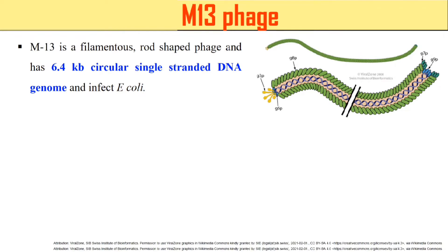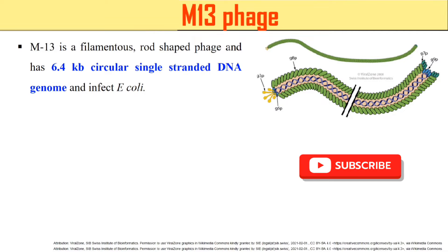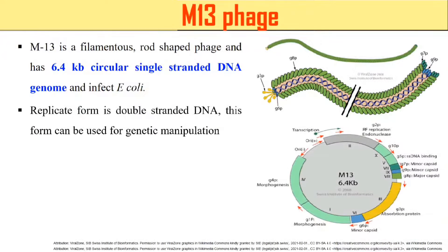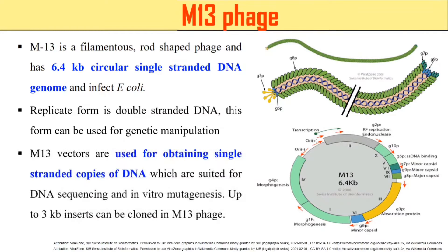M13 phage is a filamentous rod-shaped phage and its genome is 6.4 kb and single-stranded. It infects E. coli bacteria. When it replicates, its replication form is double-stranded, but its genome when it is in the head of the phage is single-stranded.